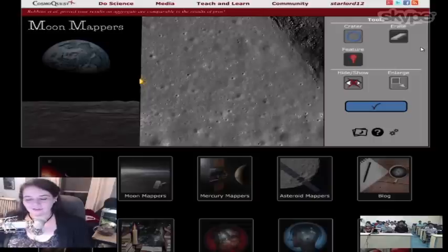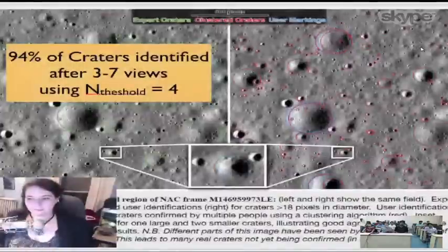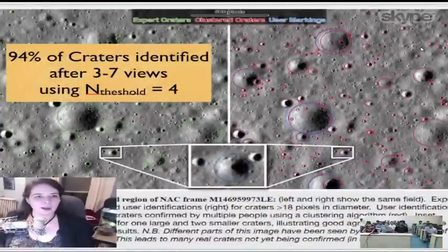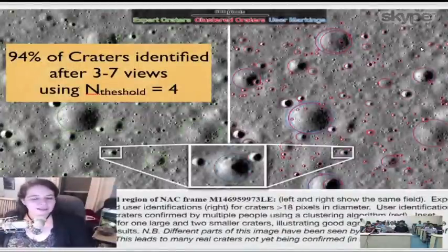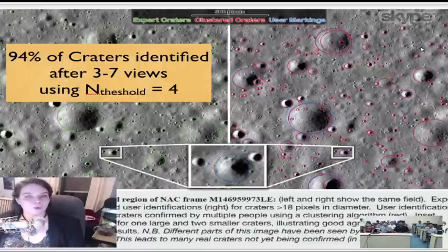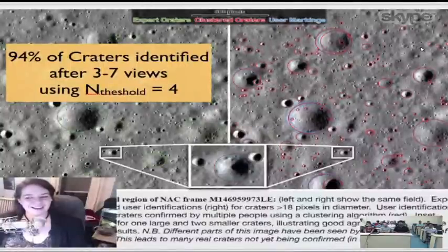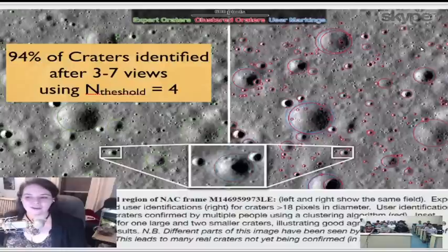The first question we had is if we're going to trust these maps, we have to know people are doing this right. What we found is if we got somewhere between three and seven people to look at an image, they found 94% of the same craters that an expert would find. And the expert got tired and missed some things.